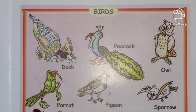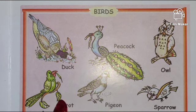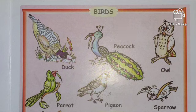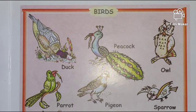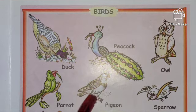Our next bird is parrot. Which bird is this? This is parrot. Say with me — parrot. Parrot को हिंदी में बोलते हैं — तोता। क्या बोलेंगे हम parrot को हिंदी में? तोता. Repeat once more — say parrot, तोता. Our next bird is pigeon. Pigeon को हिंदी में क्या बोलते हैं? कबूतर। क्या बोलेंगे हम? कबूतर। और इंग्लिश में — pigeon.